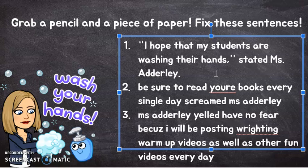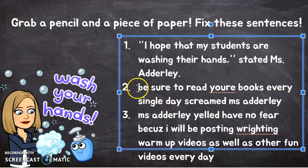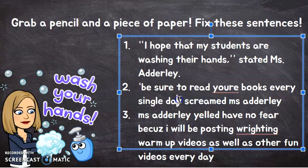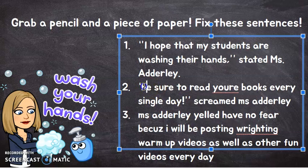Okay, next sentence: 'Be sure to read your books every day, every single day, screamed Miss Adderley.' First of all, like I said in the last one, I'm not saying this whole sentence — I'm only saying 'Be sure to read your books every single day.' So what punctuation goes there — a period, comma, or exclamation mark? An exclamation mark, right, because I'm screaming that. So fix that, put the quotes around the spoken part, and use a capital B at the beginning of the sentence.